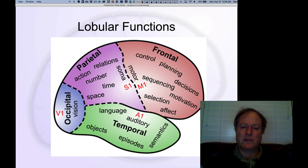This is what we call the posterior cortex, the occipital lobe, which is really primarily just vision, parietal lobe, temporal lobe.